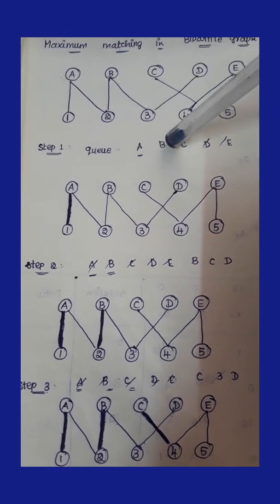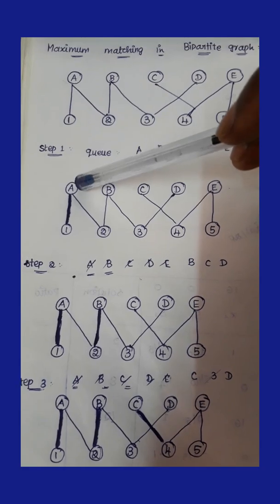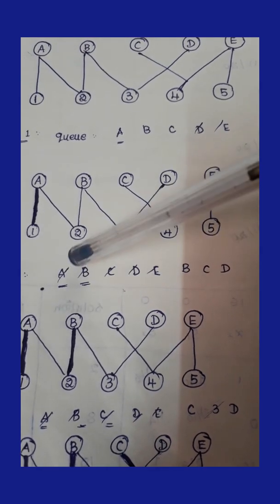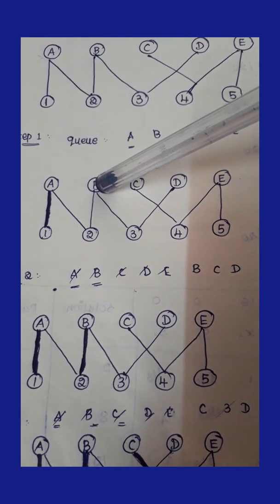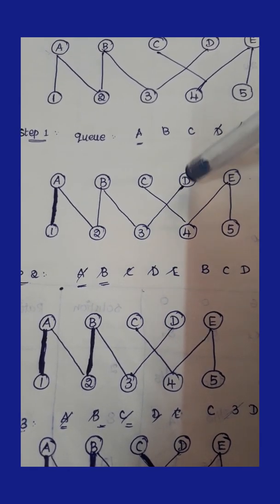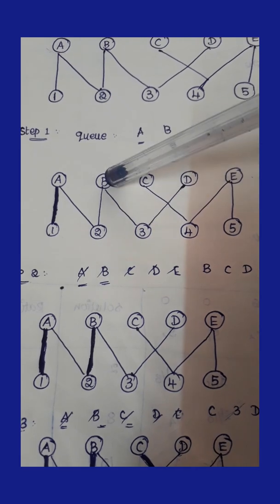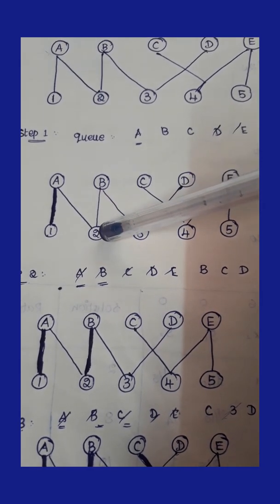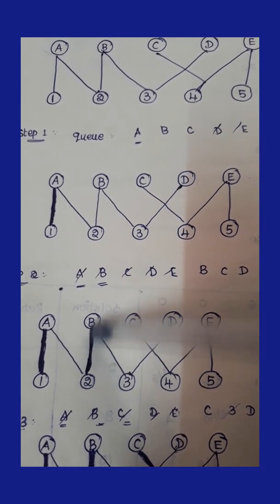The next vertex in the queue is B. Whatever vertices have already formed a perfect pair are struck out from the queue, so A is struck out. Now we find the perfect pair for B. B is connected with 2 and B is connected with 3. Node 3 is also connected with D, so we should not take 3 for B. Node 2 is connected with A and B, but A is already assigned to 1, so only B can pair with 2. B and 2 are matched as a pair and marked with a shaded line.